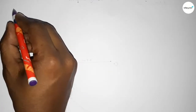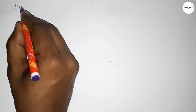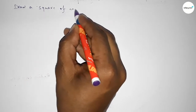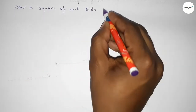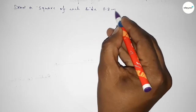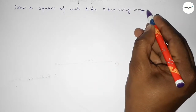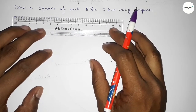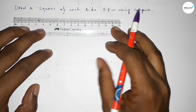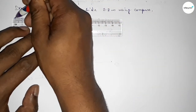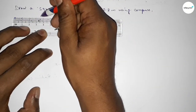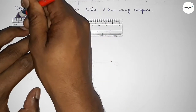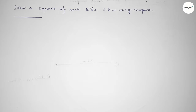Hi everyone, welcome to SI Share Classes. Today in this video we have to draw a square of each side 3.8 centimeter by using compass. So let's start the video. First of all, drawing here a line of length 3.8 centimeter — starting 0, 1, 2, 3, 3.5, 6, 7, 8 — so this is a 3.8 centimeter line.